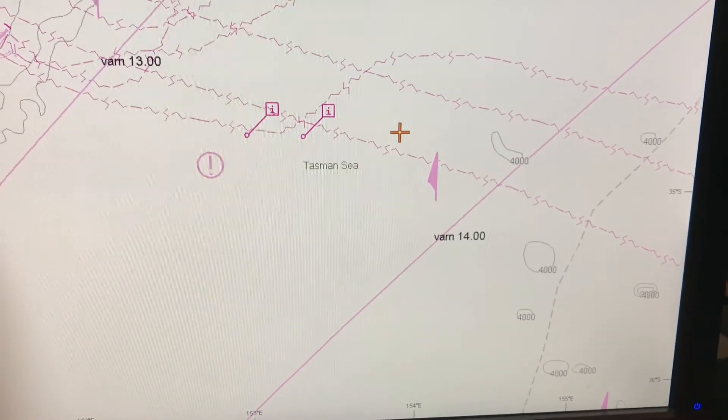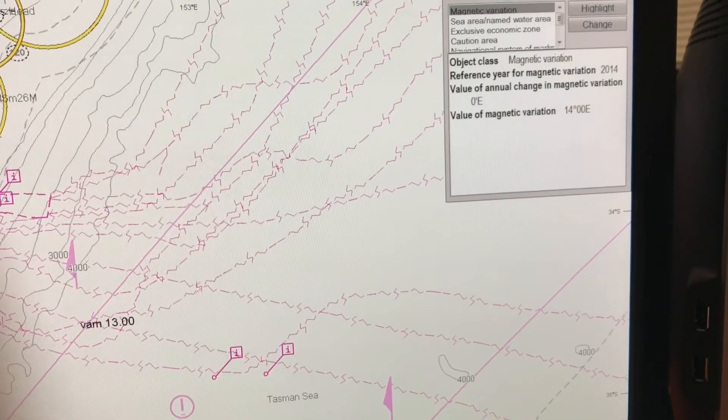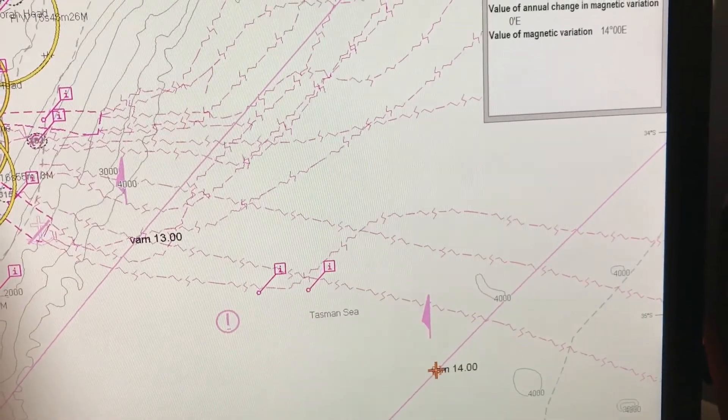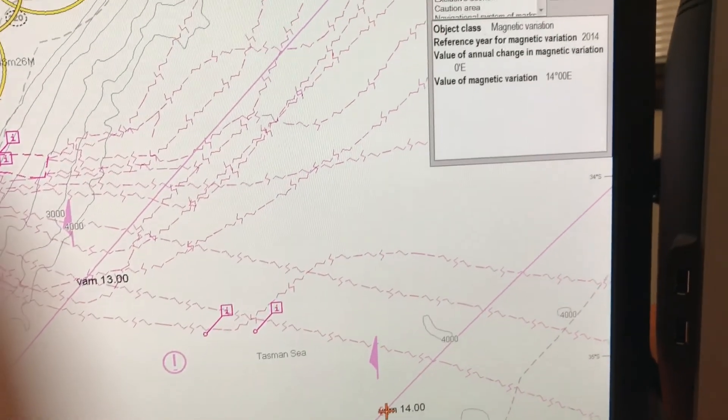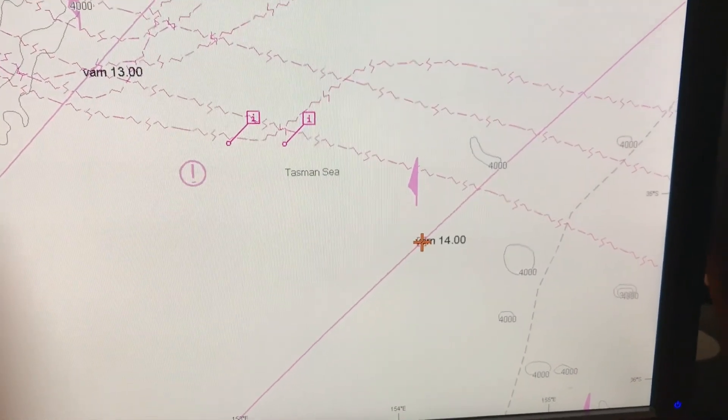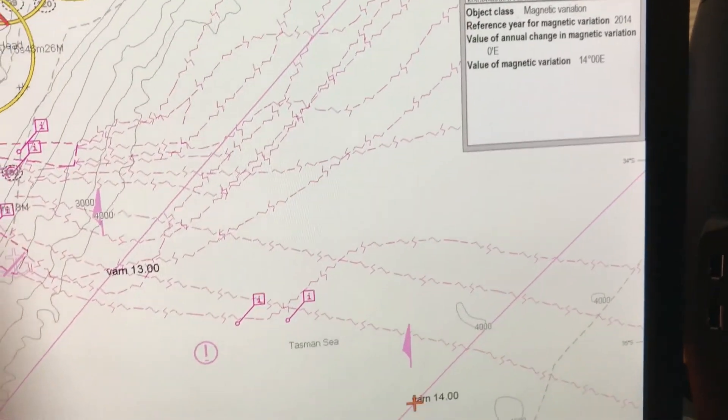So to find the information about the variation you can either click on the letters VARN or you can click on the arrow above it. And you can see here that information about the variation is provided on the side, the reference here and the correction. Again, once again you can see the reference here, the value of annual change and the value of the magnetic variation is provided on the side.